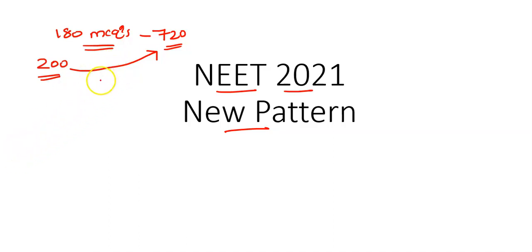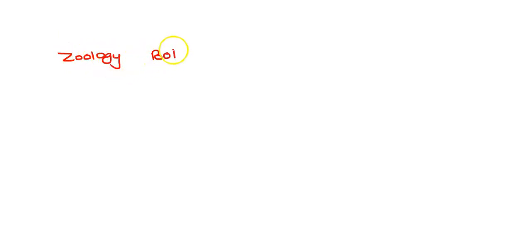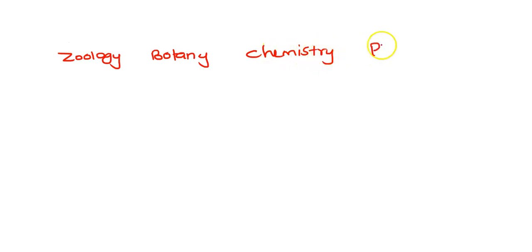We're going to get a subject. Biology, Chemistry and Physics. This biology is a critical part — zoology. The subjects are: 1. Zoology, 2. Botany, 3. Chemistry, 4. Physics. This is 4 subjects.